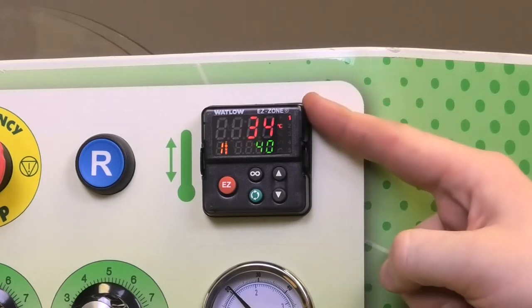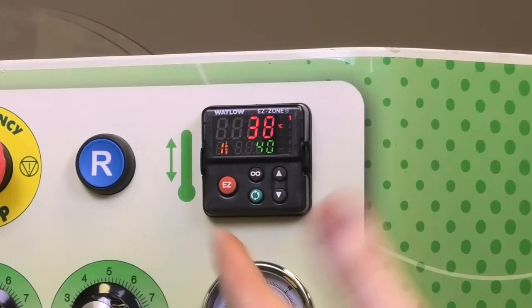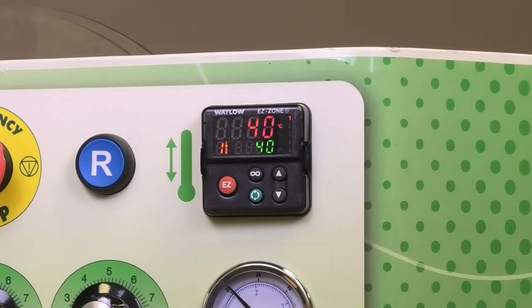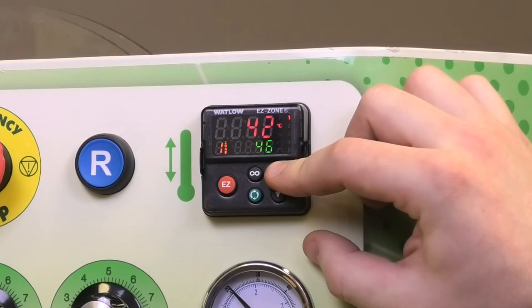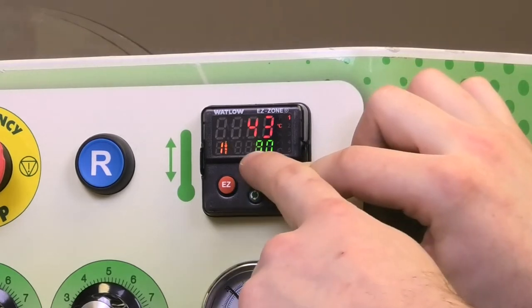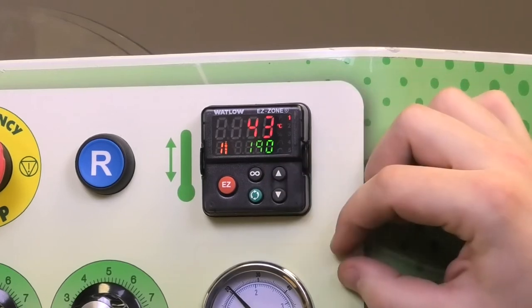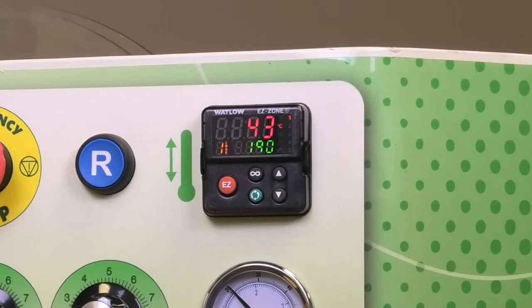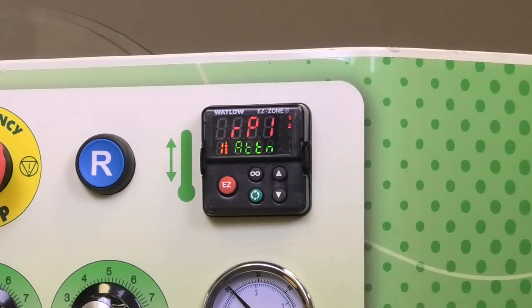So this is your temperature controller. We're going to avoid hitting these three buttons. That's what we would use to program the temperature controller itself. We're going to stick with the up and down arrows. This will take up the lower number. That is our set point. And then after releasing, you're going to see the red number climb to the green. Once it is set at your desired temperature, you're ready to weld.